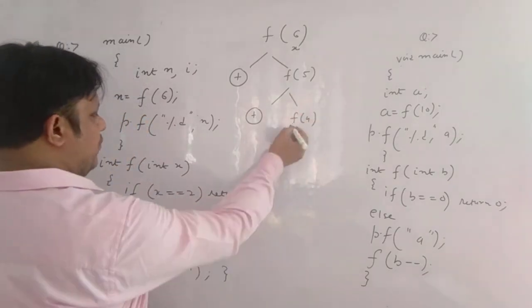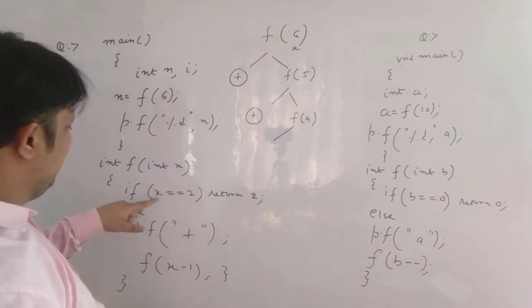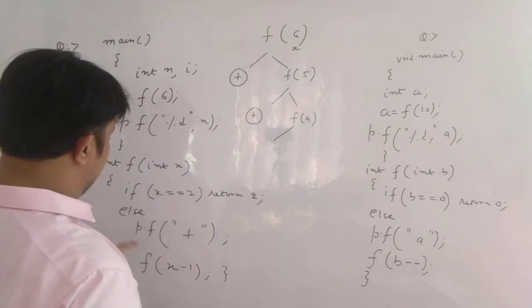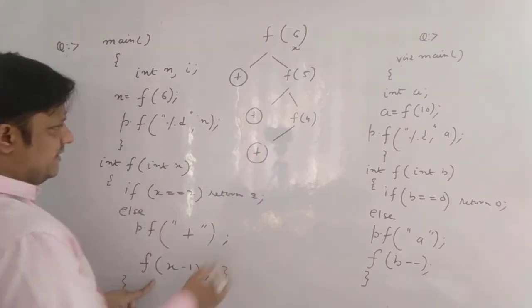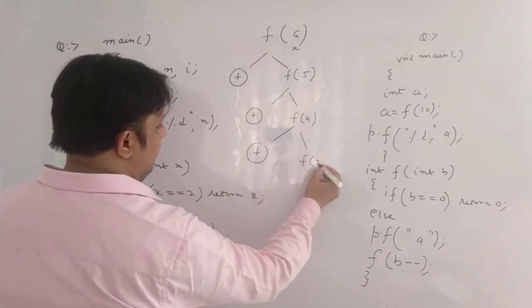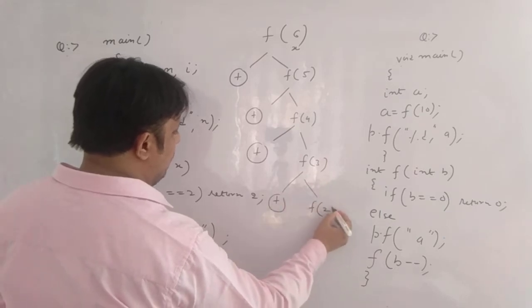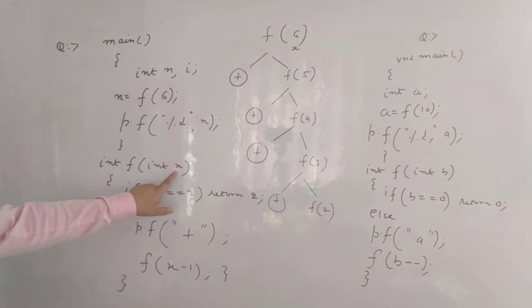So when f(4), then again when you call f(4), x becomes 4. So 4 == 2, condition false. Again one more plus and then f(3). When you call f(3) again a plus, then your f(2). When you call f(2), your x is 2.